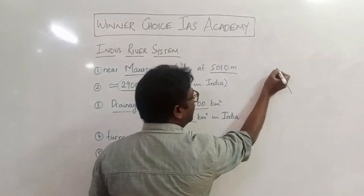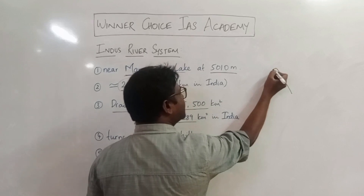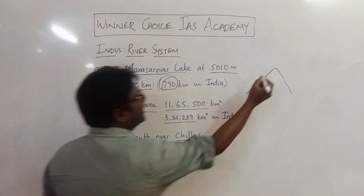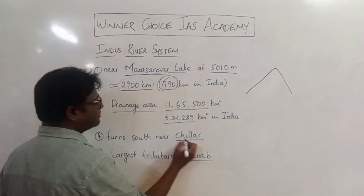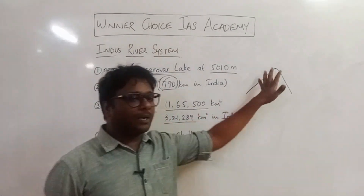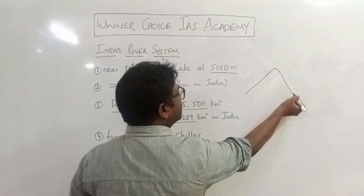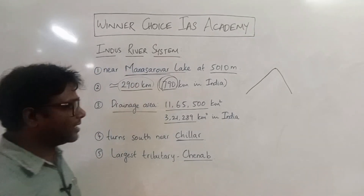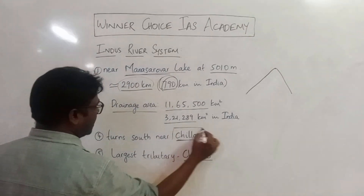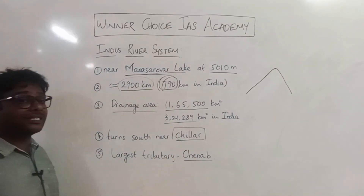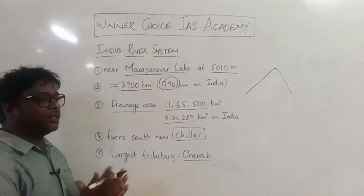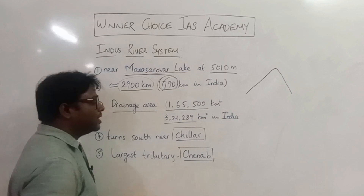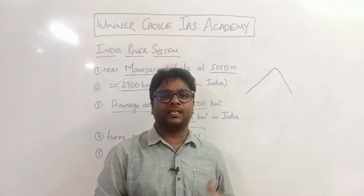At this particular point, the river goes to the south-west direction. The other side is located in the north-west. This is the largest tributary of the Indus River.